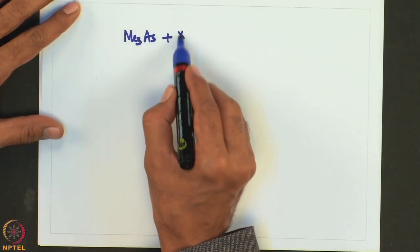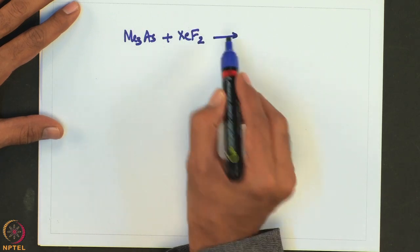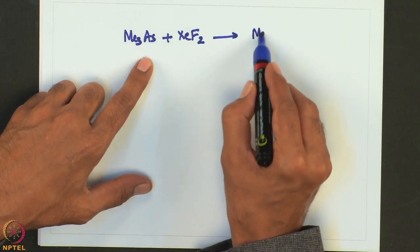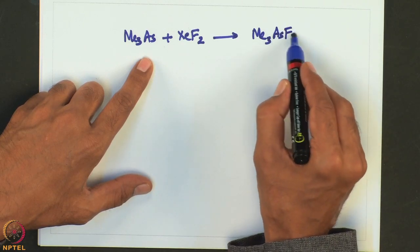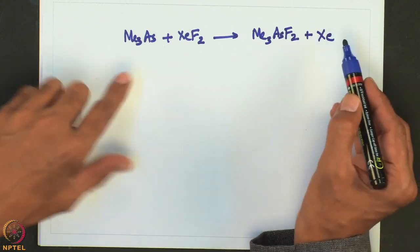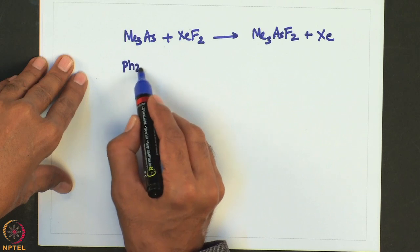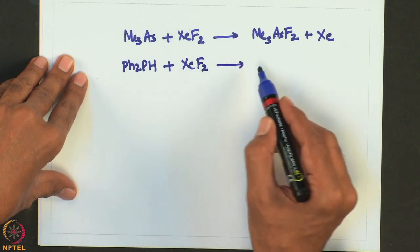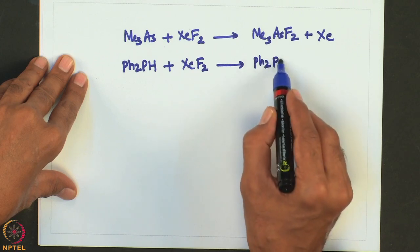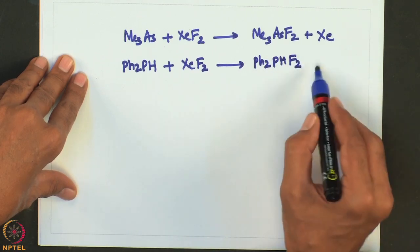For example, if methyl or phenyl groups are present they are not fluorinated — only the central atom is fluorinated. For instance, treating trimethylarsine with XeF2 gives pentavalent trimethyldifluoroarsine. Similarly, if diphenylphosphine is treated with xenon difluoride, phosphorus gets fluorinated to give Ph2PHF2 plus xenon.